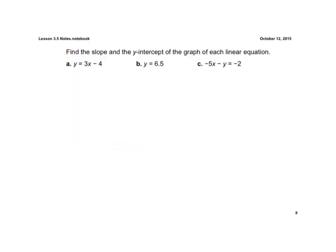So a couple examples here. Find the slope and the Y intercept of the graph of each equation here. Now this first one is already in slope intercept form, Y equals MX plus B.